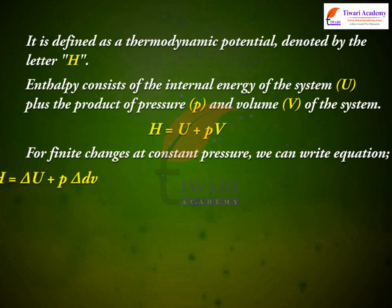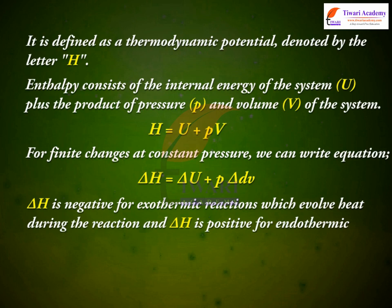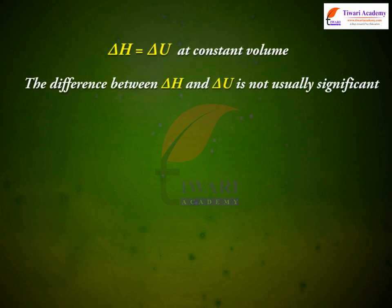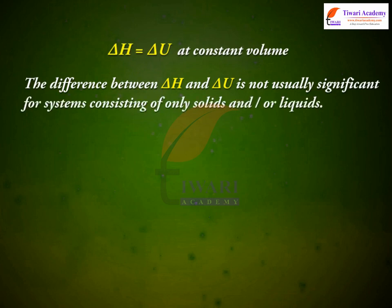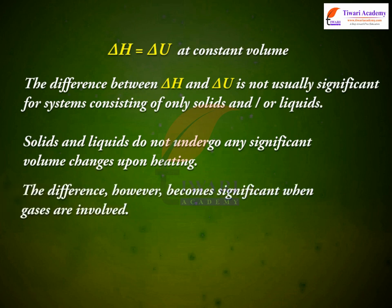Enthalpy consists of the internal energy of the system U plus the product of pressure P and volume V of the system. For finite changes at constant pressure, we can write: ΔH = ΔU + P·ΔV. ΔH is negative for exothermic reactions which evolve heat, and ΔH is positive for endothermic reactions which absorb heat from the surroundings. The difference between ΔH and ΔU is not usually significant for systems consisting of only solids and/or liquids, since solids and liquids do not undergo any significant volume changes upon heating.